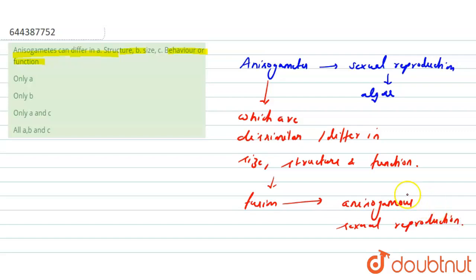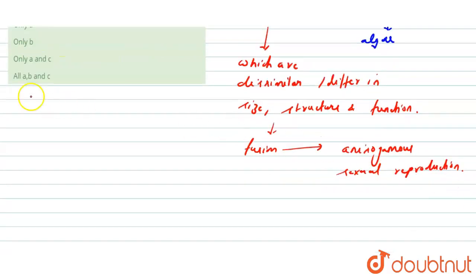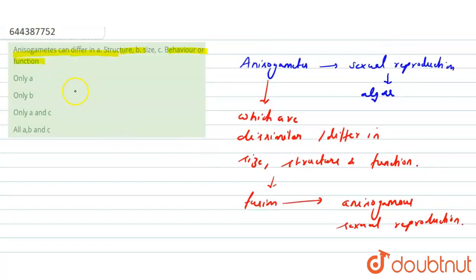This type of reproduction can be seen in some species of Chlamydomonas, for example. Some species of Chlamydomonas have these gametes. Now here the question says that anisogametes can differ in.